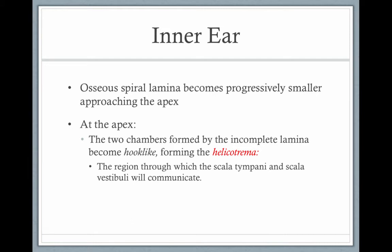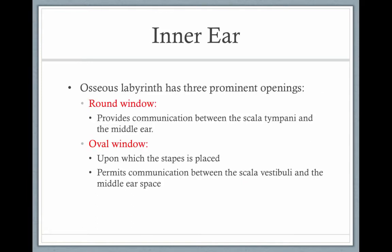The spiral lamina becomes progressively smaller as it coils up to the apex, or the top of the cochlea. At the apex, the two chambers meet in a hook-like fashion, and it's called the helicotrema, and it's through there that the fluids communicate between the scala tympani and the scala vestibuli.